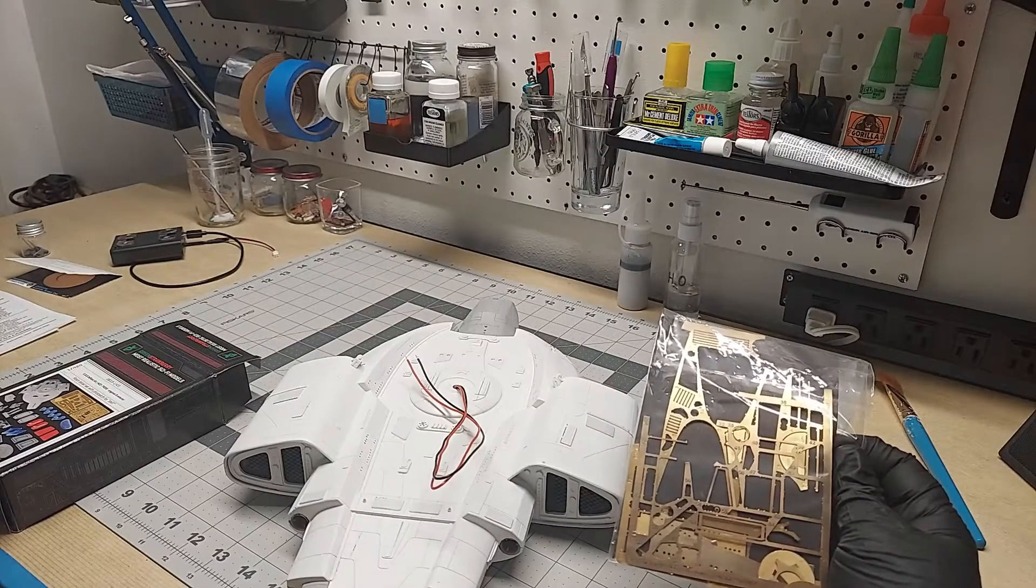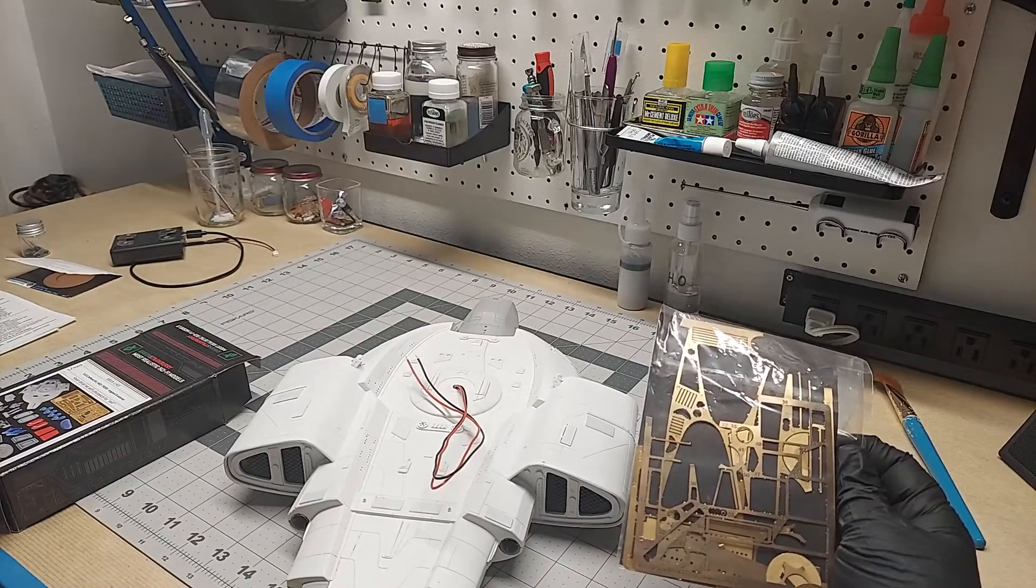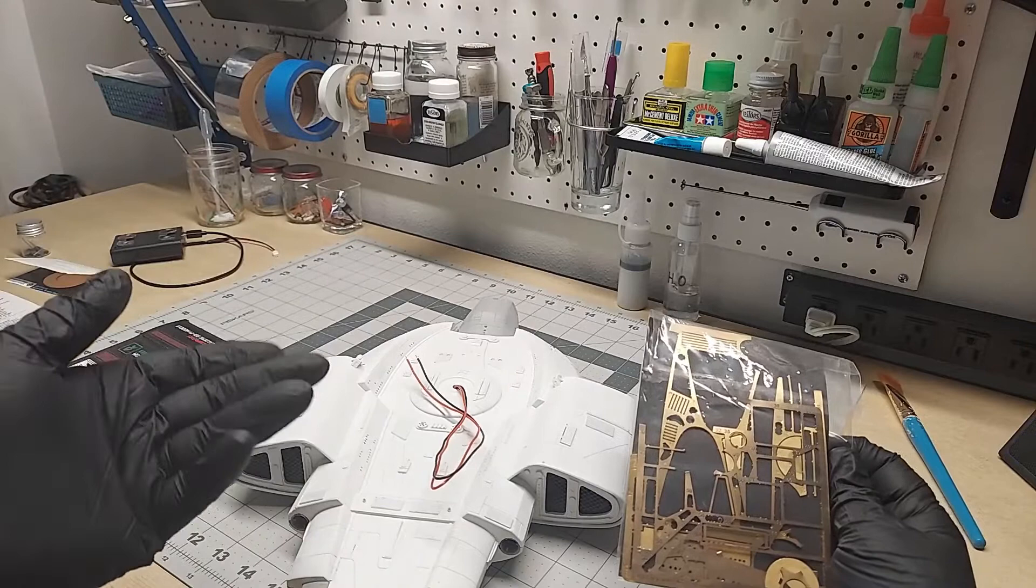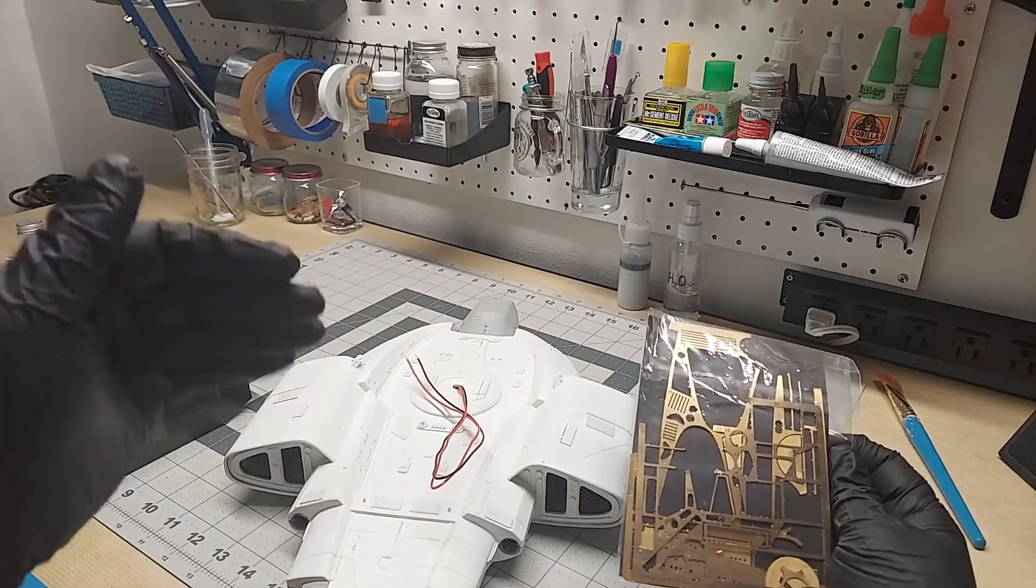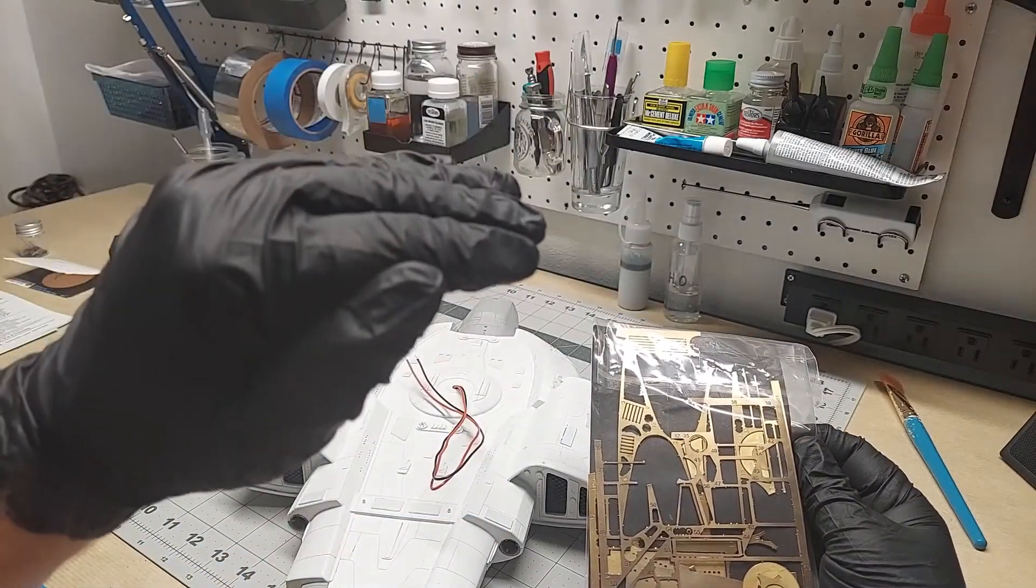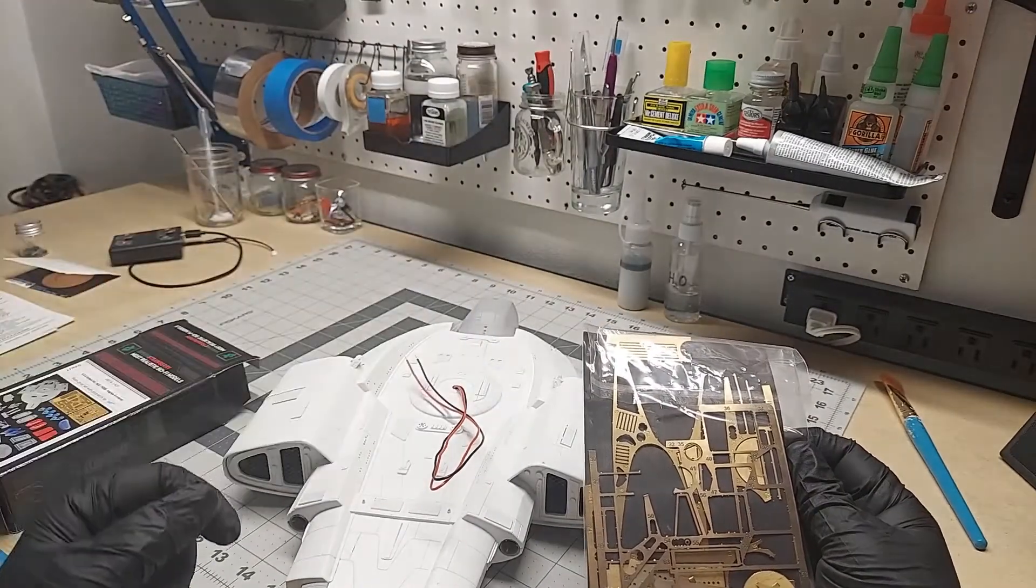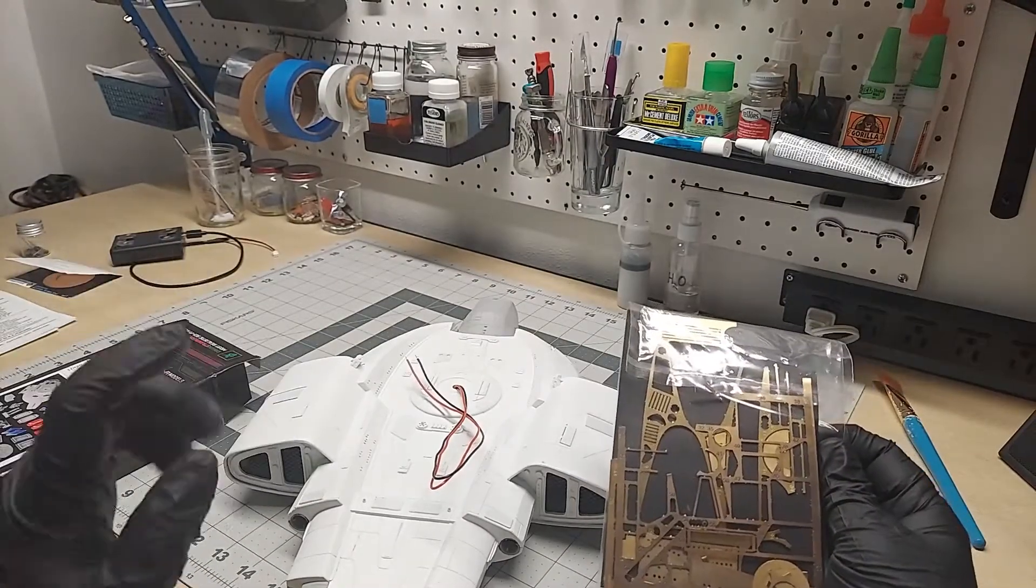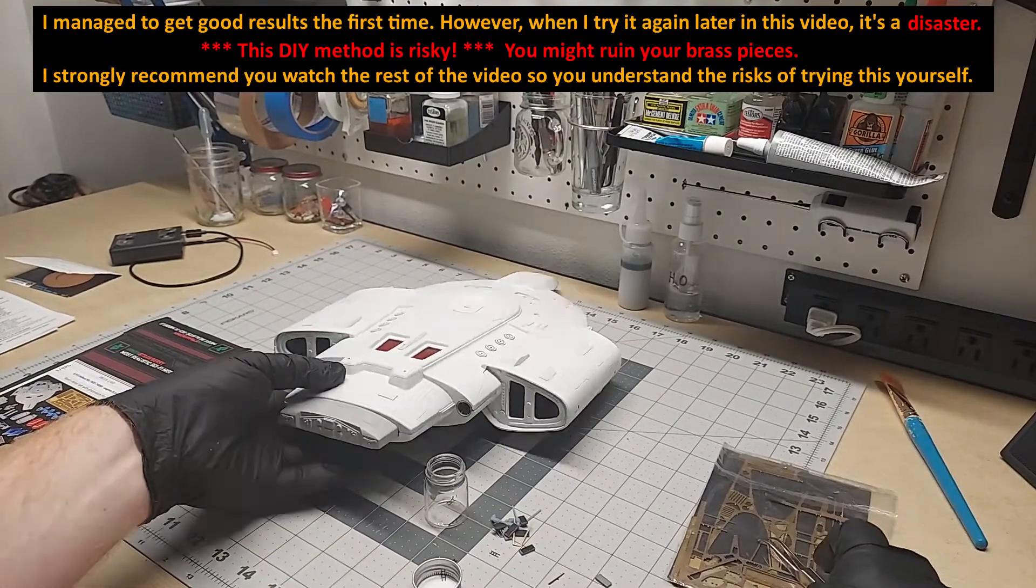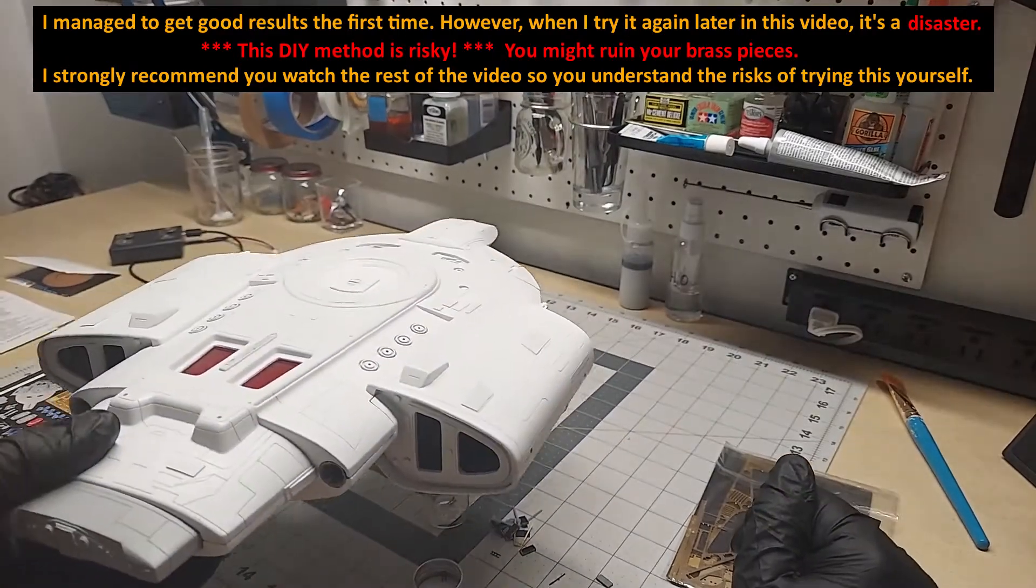It didn't have a very strong reaction at first. I thought okay, if it's the ammonia doing it, ammonia is a gas. Maybe if I suspend the brass above the surface of the Brasso and enclose it in a closed container so the ammonia stays trapped inside, maybe the gas will react with it. And that totally worked, it worked really well.